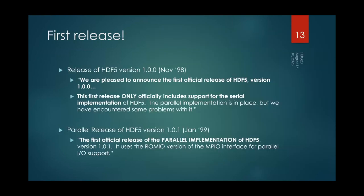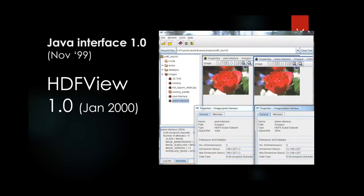The first release of HDF5 1.0.0 happened in November 1998. A blurb from the HDF newsletter noted that the first release only officially included support for serial I/O. A couple of months later, the first official release of the parallel implementation came out. So we had a library and we were ready to go. Remembering how much the visualization tools had mattered to the acceptance of the original HDF, we wanted to have some kind of viewer that was very HDF-focused, so we worked on HDFView.